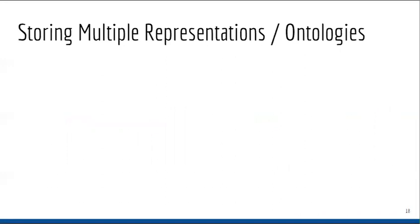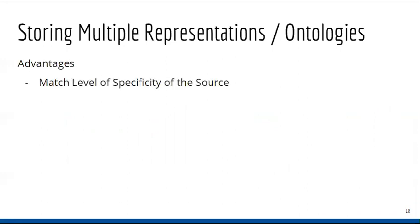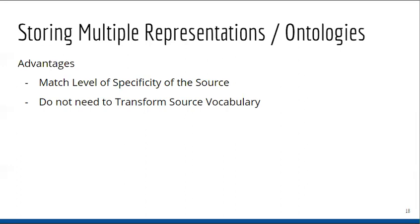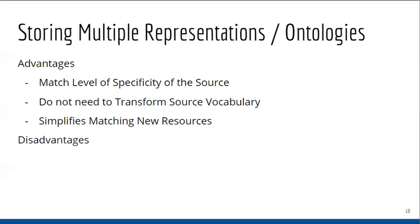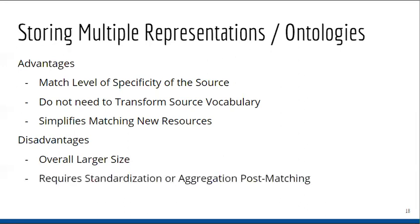There are some advantages and disadvantages to the approach taken by GraphKB. Some of the advantages are that we are able to match the level of specificity given by the source, which means we don't have to make assumptions. We don't need to transform the source vocabulary, which makes it easy to trace back from the version stored in GraphKB to the original version from the source knowledge base. This also simplifies matching and importing resources because there are fewer steps involved. The disadvantages, however, are that it makes the database overall a larger size, and we still need to do some of the standardization or aggregation work after matching.